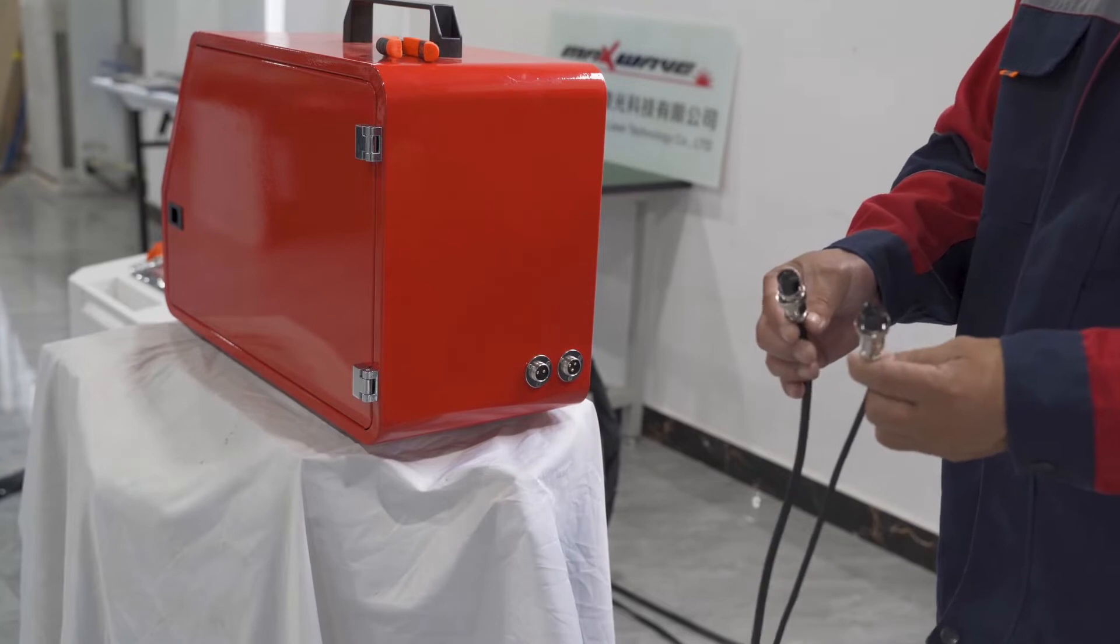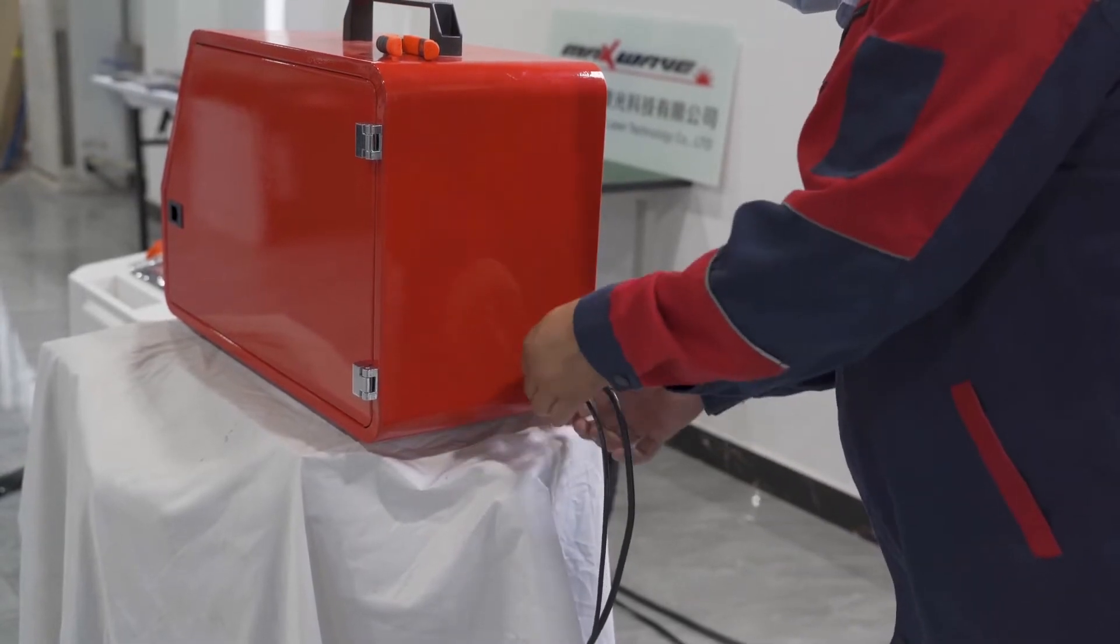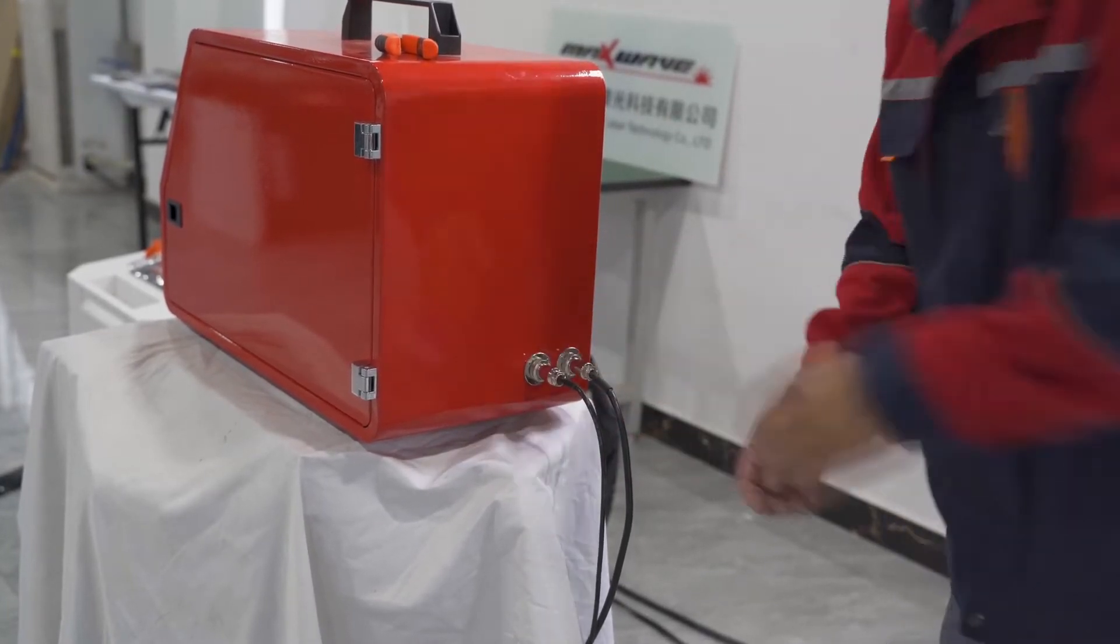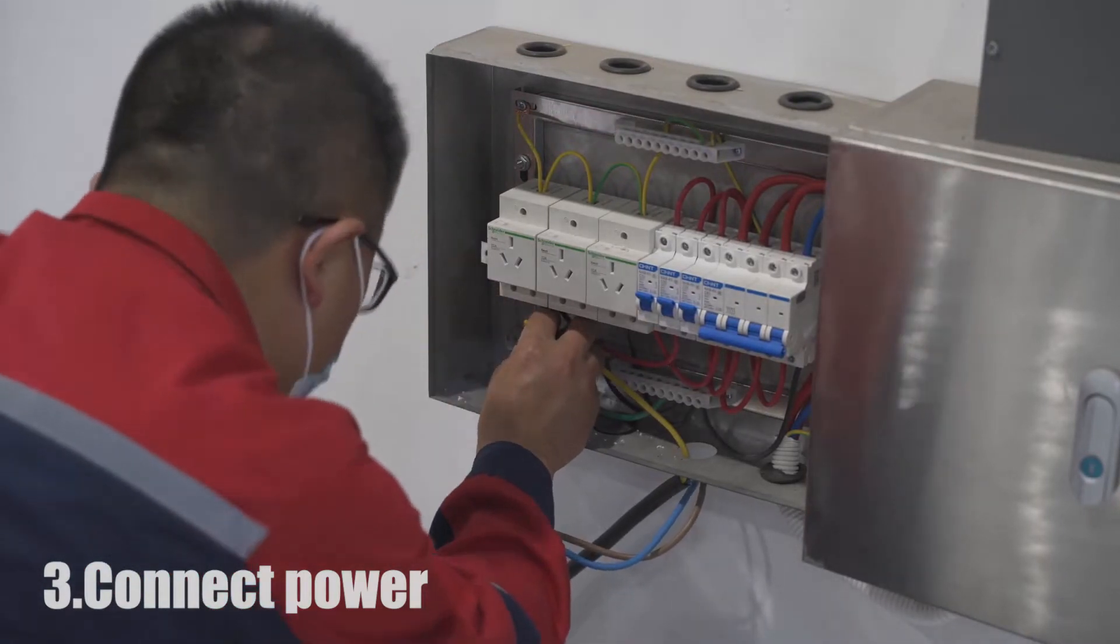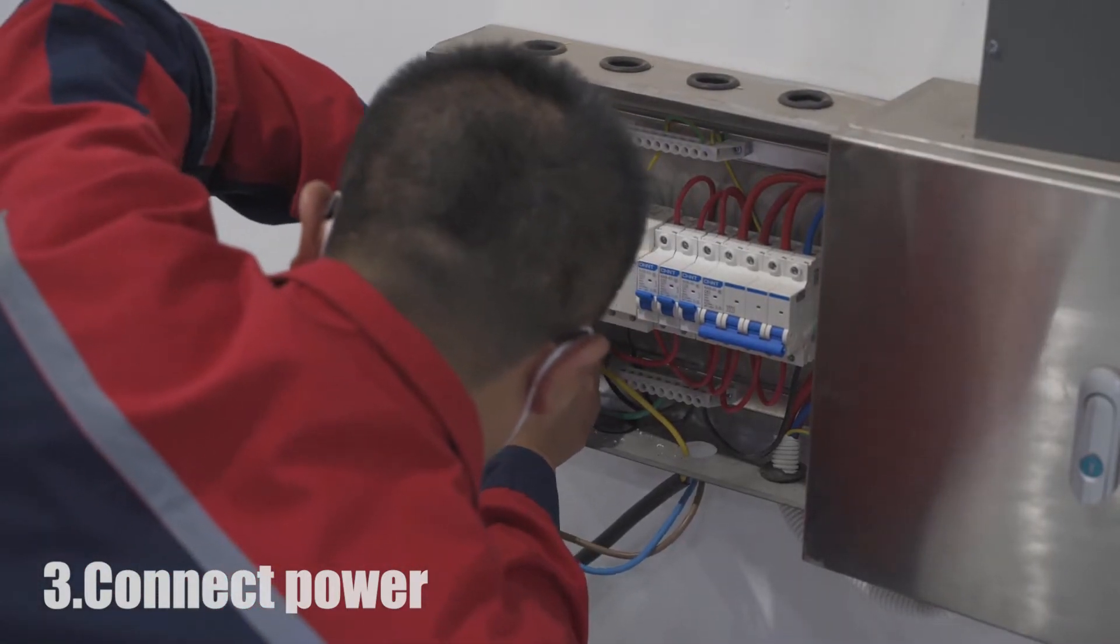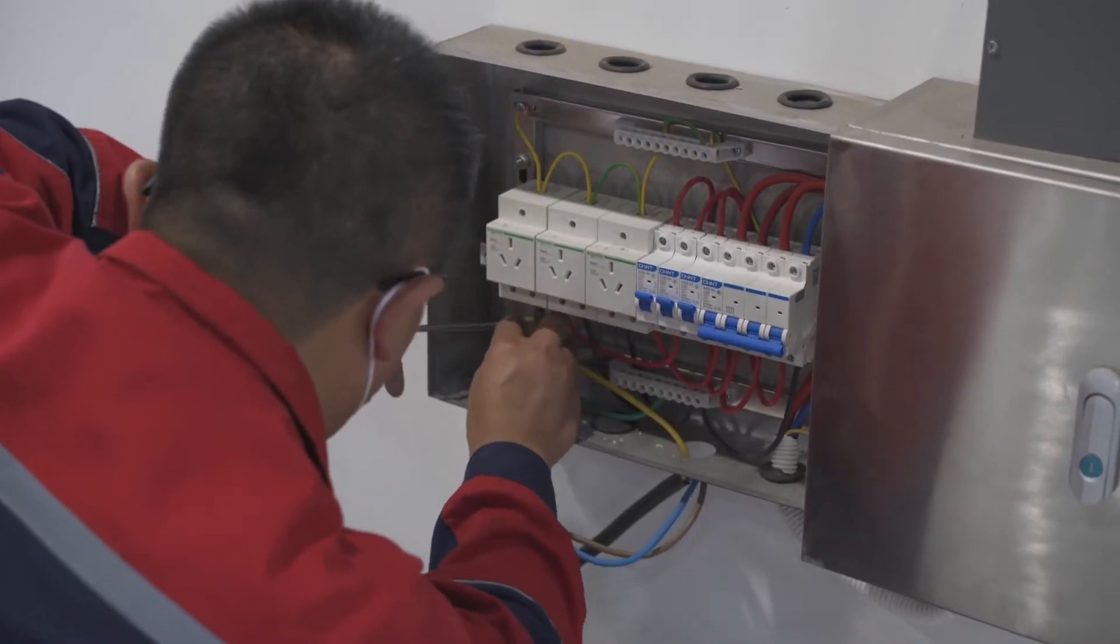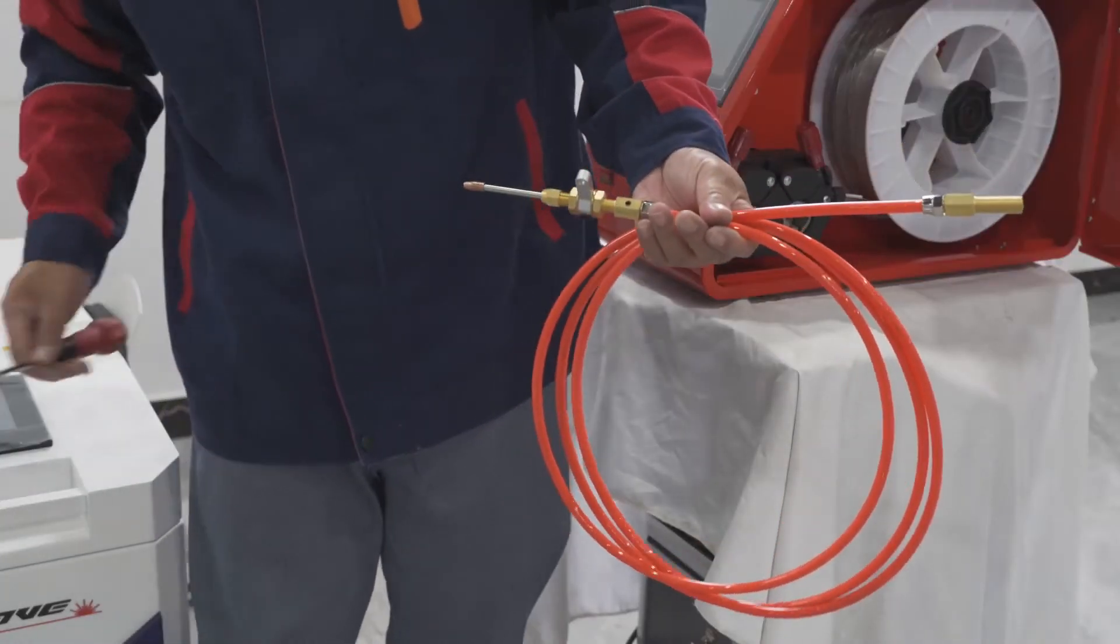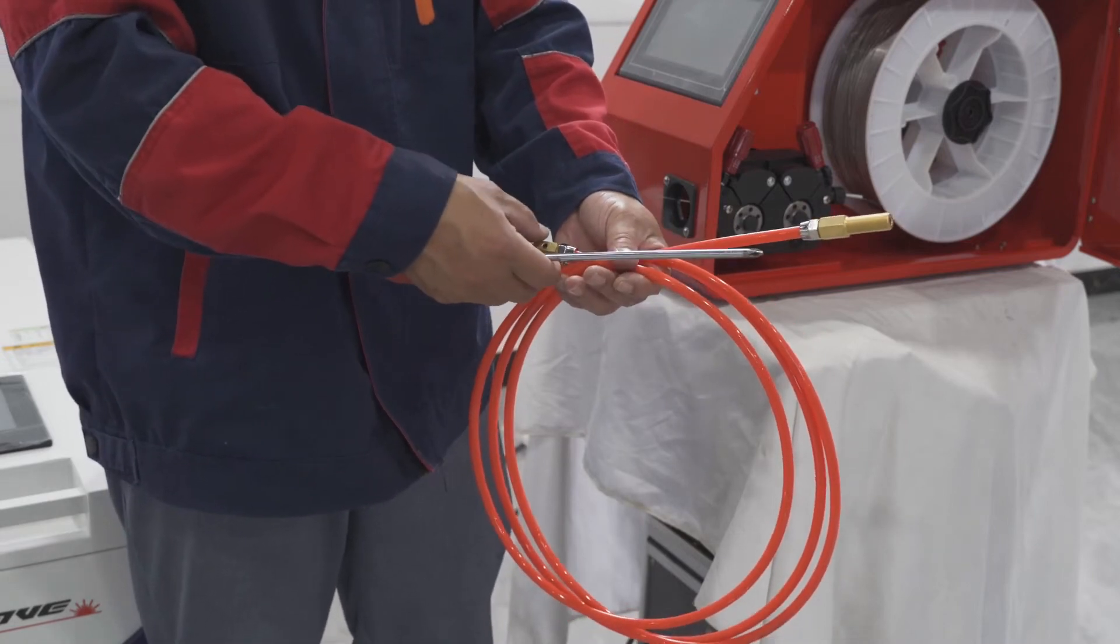Now we connect the weld between the weld feeder and the machine. Now we install the power supply weld of the machine. Install the weld tube between the weld feeder and the machine.